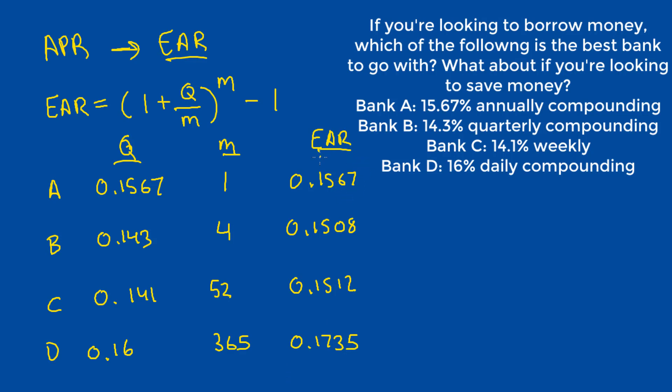Now to answer the question, all we have to do is consider the objective of the borrower and the objective of the saver in a very logical manner. So the borrower's objective would be to pay as little interest as possible on the money that they take out of the bank. So what they would do is they would look for the lowest interest rate offered, and that would be Bank B. So this is the best bank for the borrower.